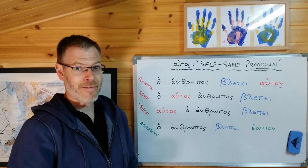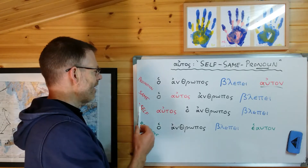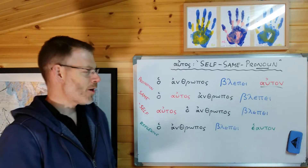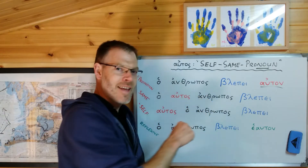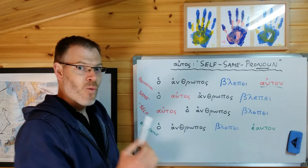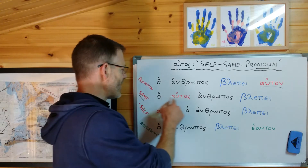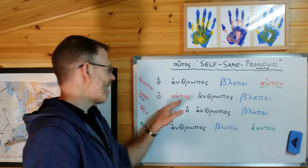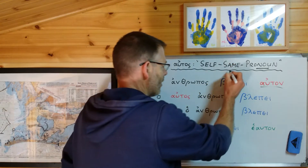In this section of Duff, what's being introduced are two other new ways in which autos can also be used. It can be used in this way: 'hot autos anthropos blepe'. Notice the word order — the red pronoun comes between the article and its noun, and it's in the same case and will have the same number. When this word order is used, the pronoun means 'same': the same man sees. Notice it's a different meaning — here it's used as an adjective, as Duff points out. Self, same, pronoun.